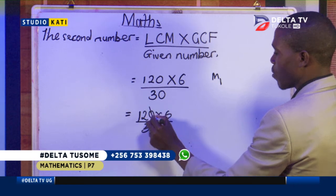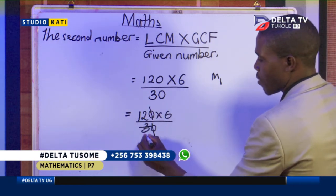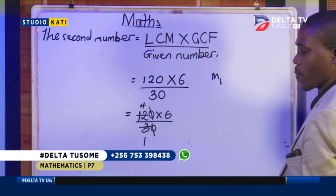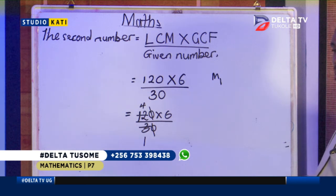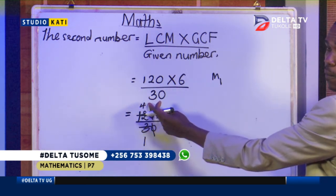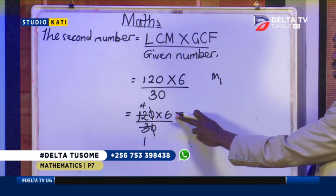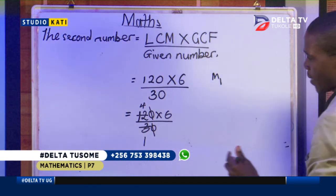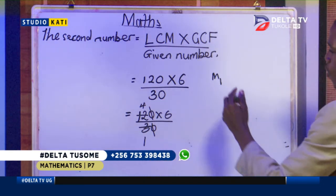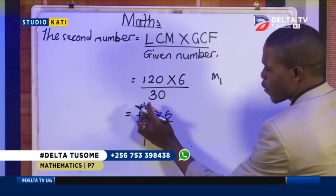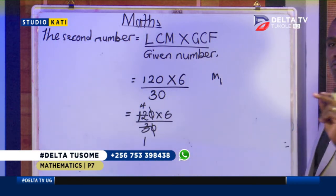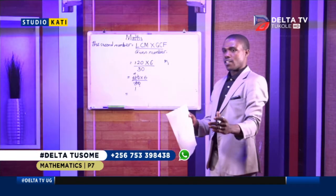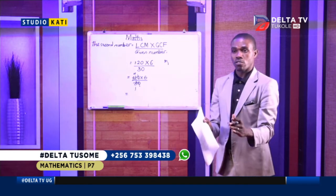I can reduce my zero with a zero. I can reduce now: 3 by 3 is 1, 12 by 3 is 4. What am I remaining with? I'm remaining with 4 times 6 divided by 1. You go and complete: what is 4 times 6? Some children do not know how to multiply. What you have to do is make sure that you draw aside what we call a multiplication table.